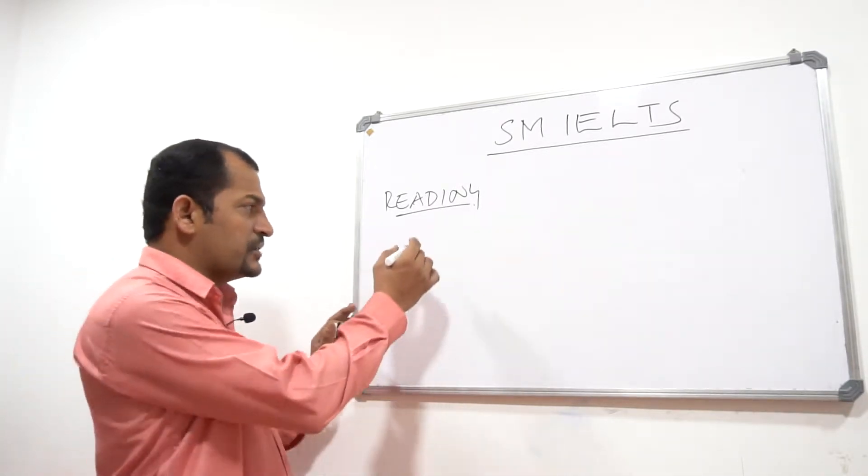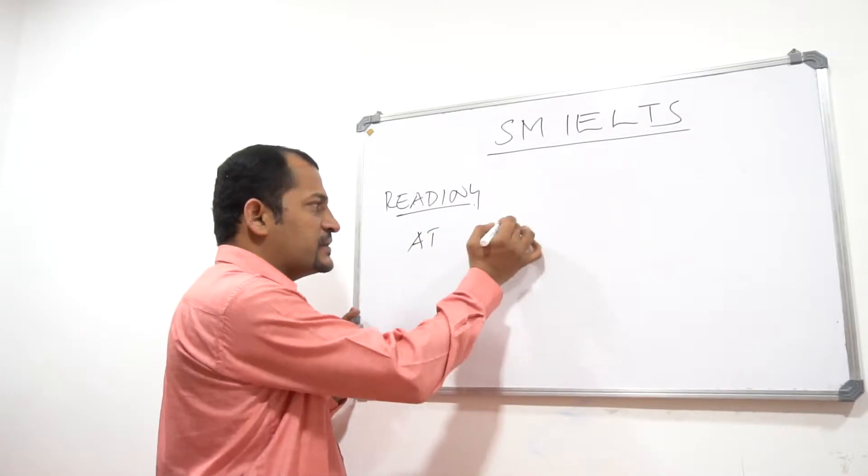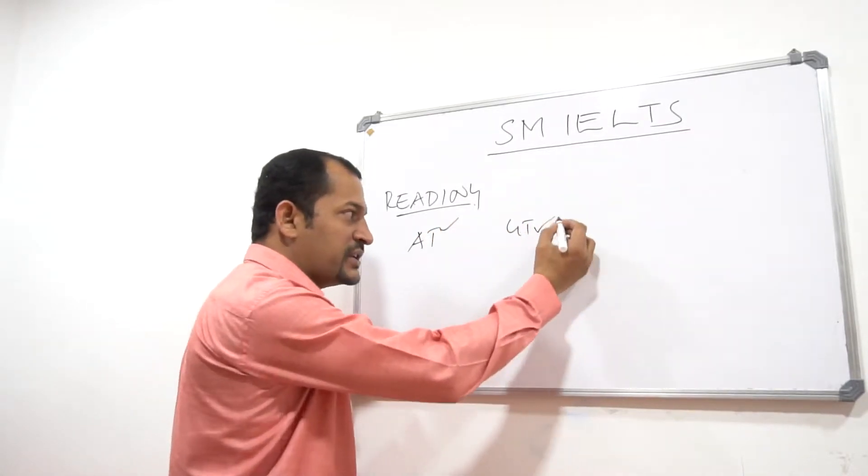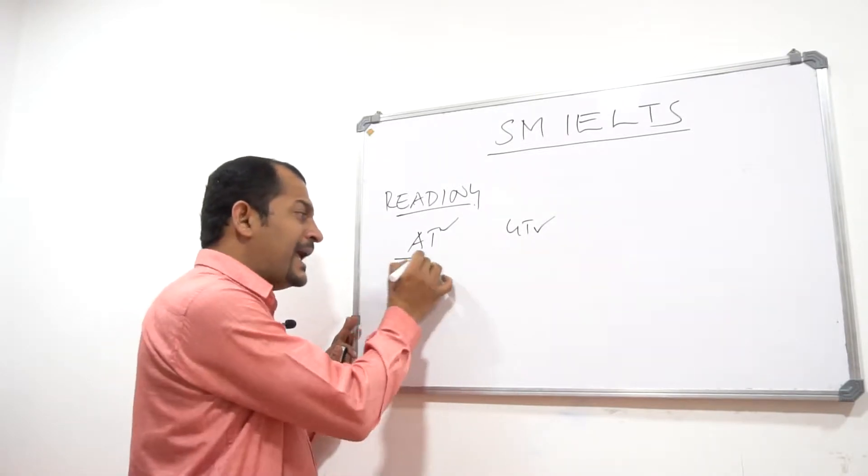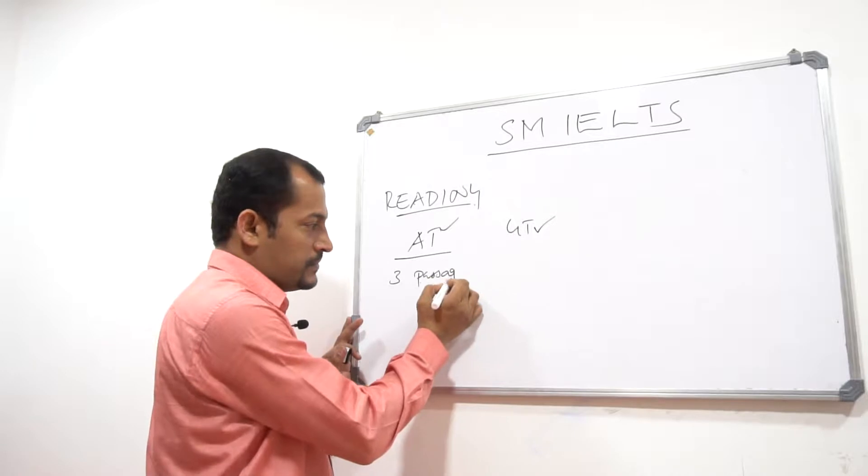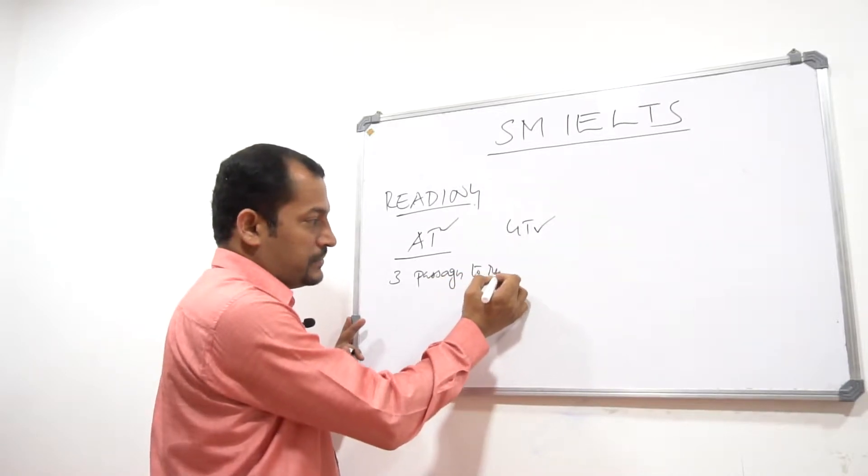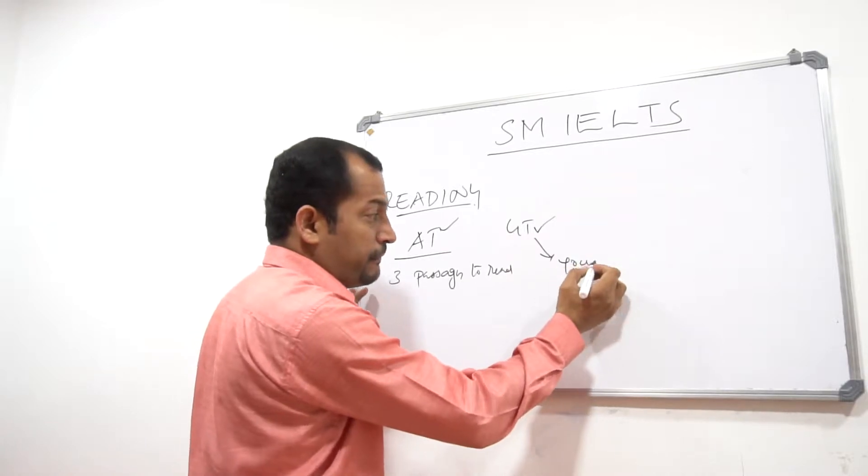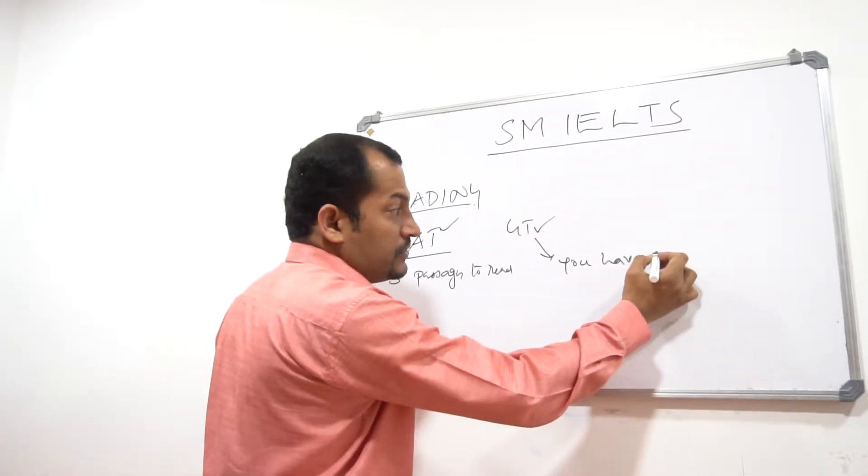In IELTS, we have two different versions of the test. The first one is Academic Training, and the second one is General Training. In Academic, you have three passages to read, and in GT, you again have three passages.